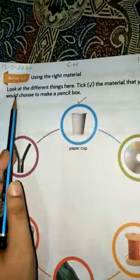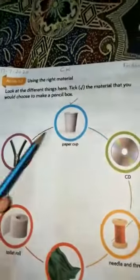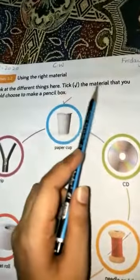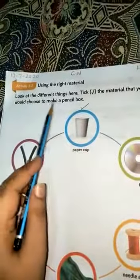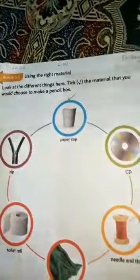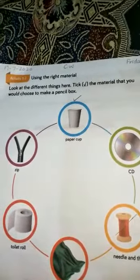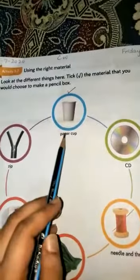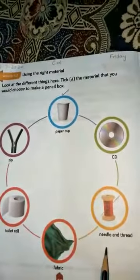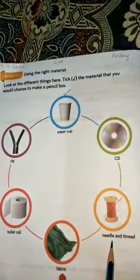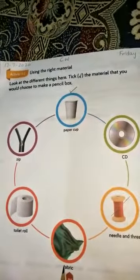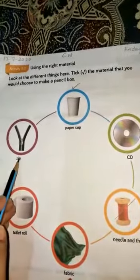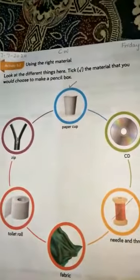Look at the different things here. You have to choose the material that you would use to make a pencil box. The materials shown are: paper cup, CD, needle and thread, fabric, toilet roll, and zip. Choose which material you would use to make a pencil box.